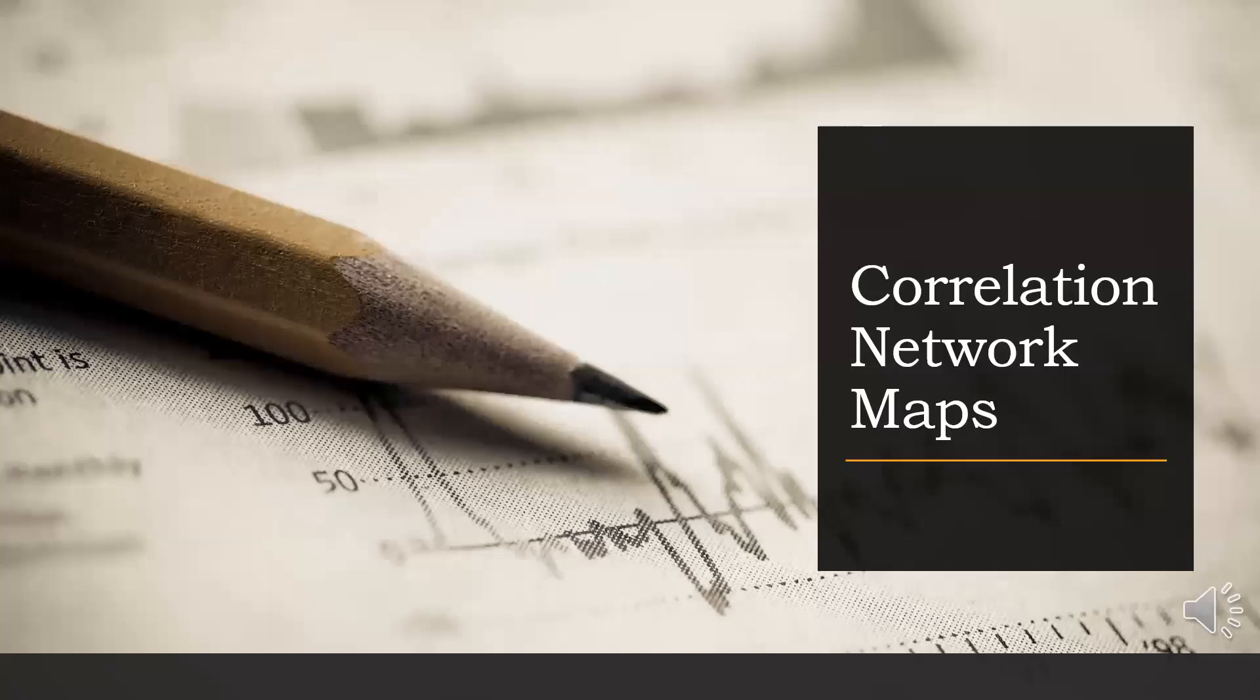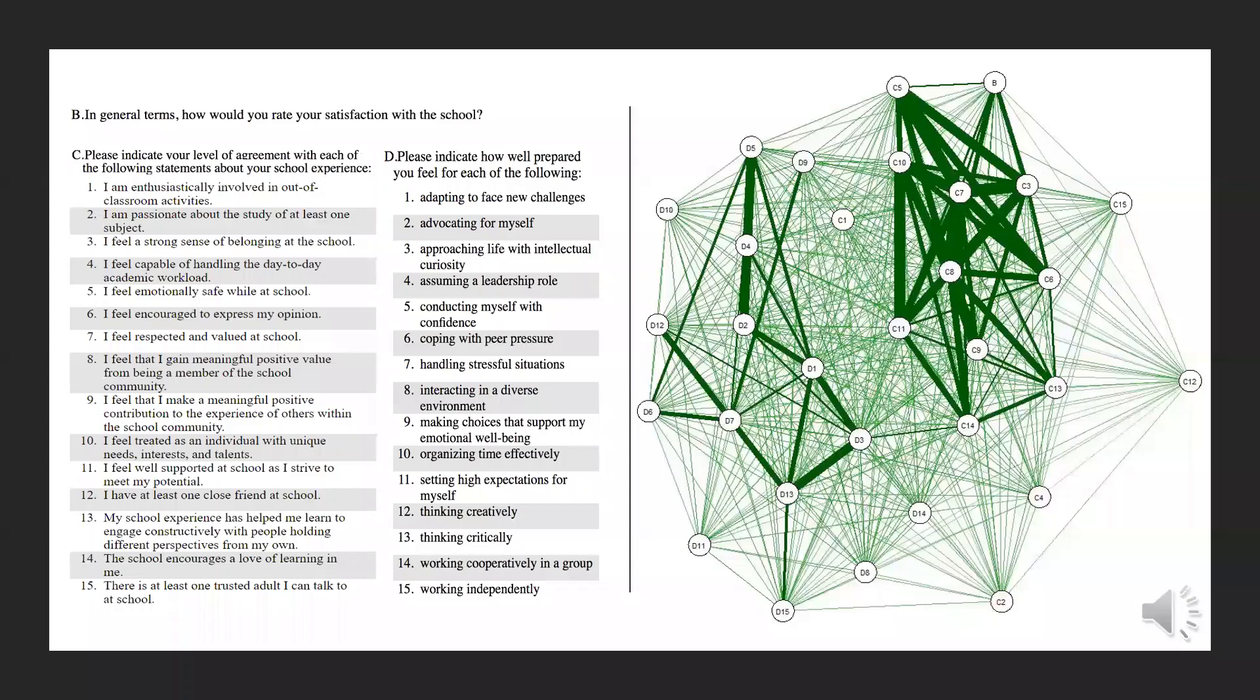Sasha has created a set of correlation network maps for us visually depicting how measures in this survey connect to one another. We'll start from 10,000 feet and then zoom in on how 31 specific measures are linked to each of time spent on homework, time spent on social media, hours of sleep, and the experience of discrimination at school.